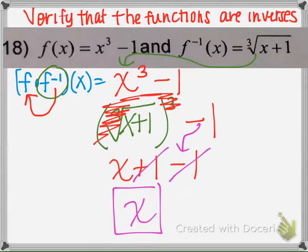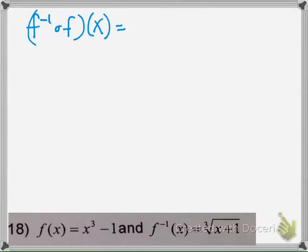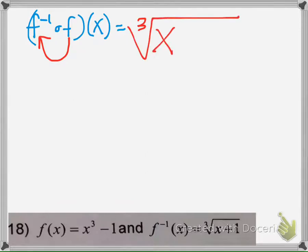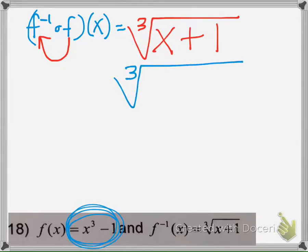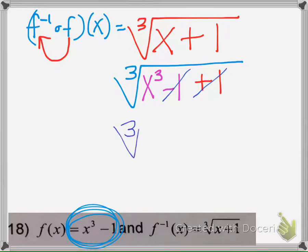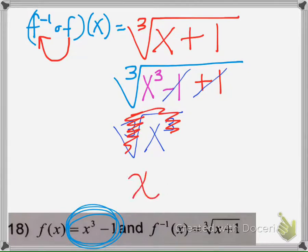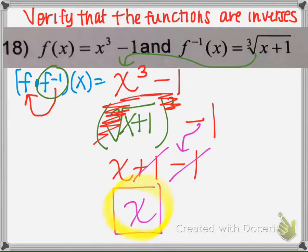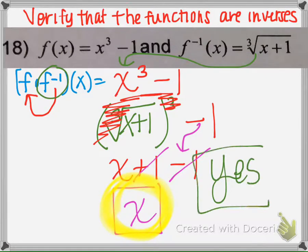That alone is not enough to know whether they are indeed inverses of each other. To make sure, we have to do it the other way around — take function f and plug it in for the inverse. We take the inverse function and plug function f in for x. When we simplify, those cancel, and we know from prior chapters that those also cancel, leaving us just with x. Since both compositions simplified to x, yes, they are inverse functions.